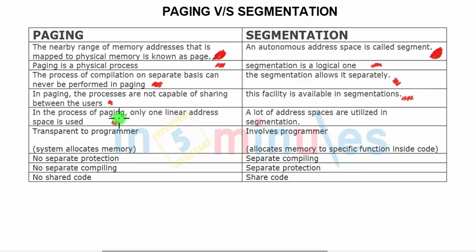In paging, only a one-dimensional address space is used — you only provide the page number and its base. The page table is searched from the page number, and the base and limit are returned. Whereas in segmentation, more address information is needed: the segment, the base, and the maximum limit up to which it is valid.